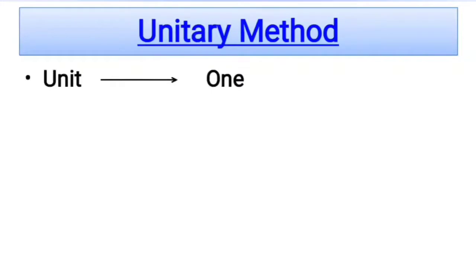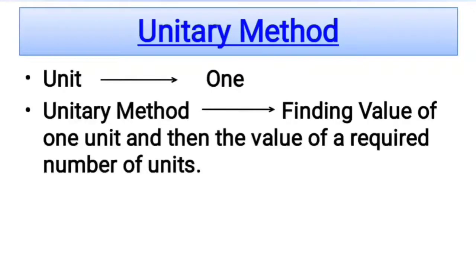Unit means 1. Unitary method is a technique for solving a problem by first finding the value of a single unit and then finding the necessary value by multiplying the single unit value.